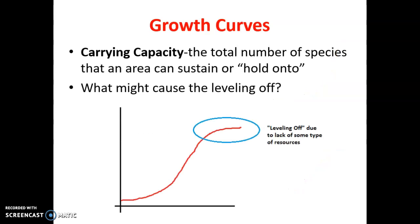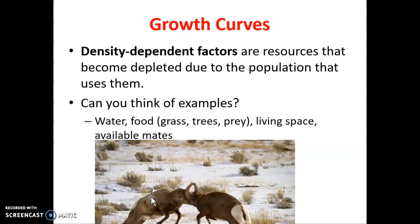That brings us to a key vocabulary word: carrying capacity — the total number of a species that an area can sustain. The things that cause that leveling off collectively are called density dependent factors. These are things organisms must have, or things that change based on population size — food, water, space, shelter. You'd also be influenced by competition, like two bighorn rams fighting. Also, as we've seen with pandemics, the higher the population, the more likely transmission is to occur.